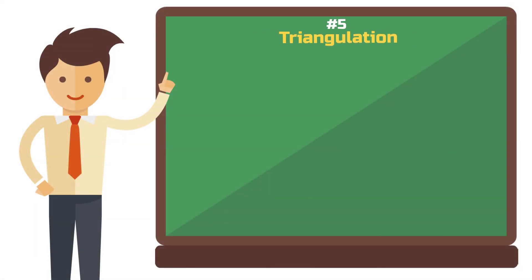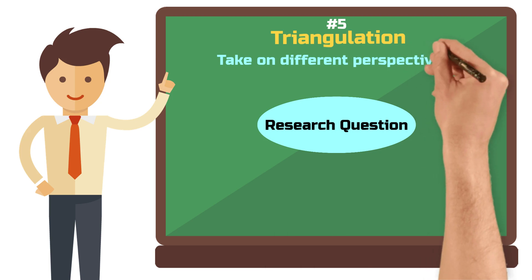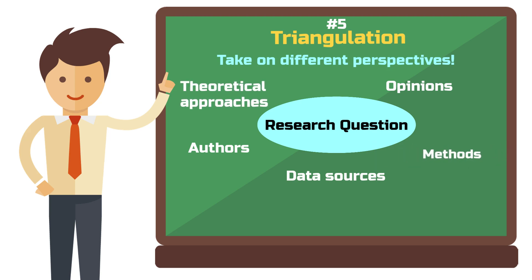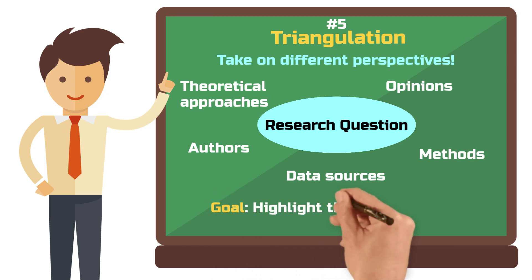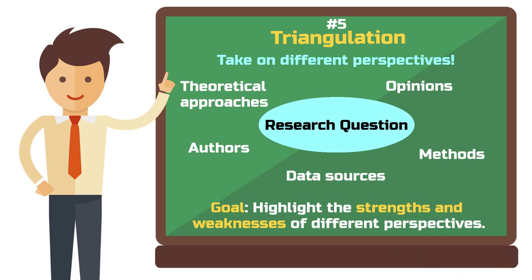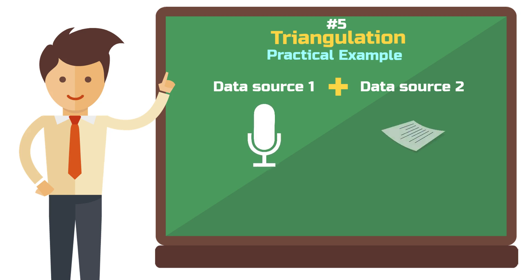Criterion number five: triangulation. Triangulation means taking different perspectives. For example, you could use various data sources, collaborate with other researchers, exchange opinions, consider different theoretical approaches, or use different methods to validate your findings. Your goal is not to achieve a definitive answer about how reality looks, but to highlight the strengths and weaknesses of different perspectives. A practical example would be adding a second data source — if you primarily conduct interviews, you could also collect and analyze some archival documents you find online.